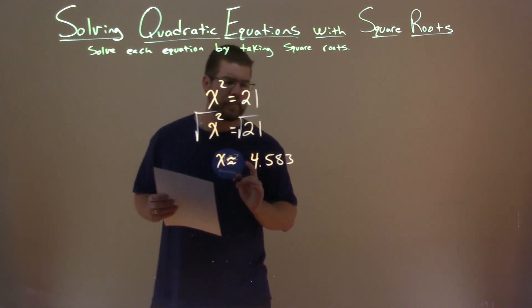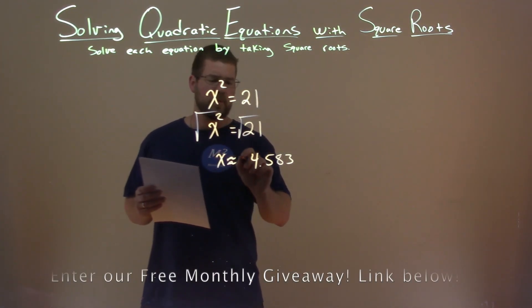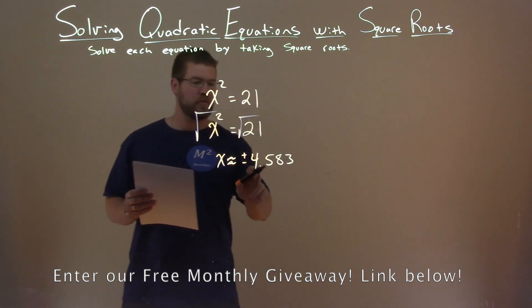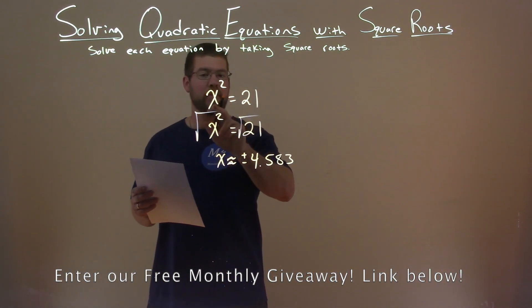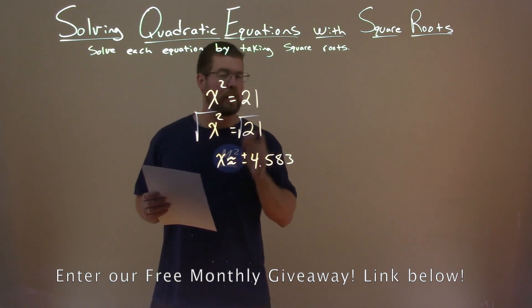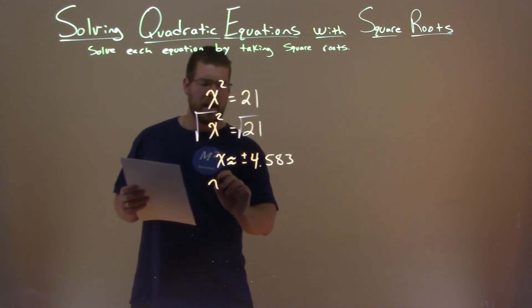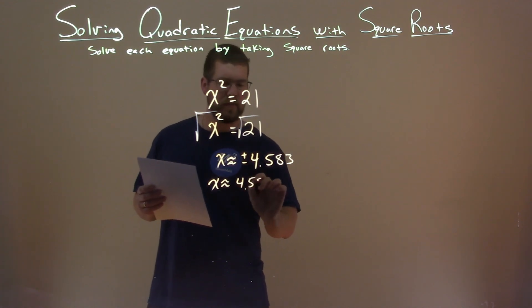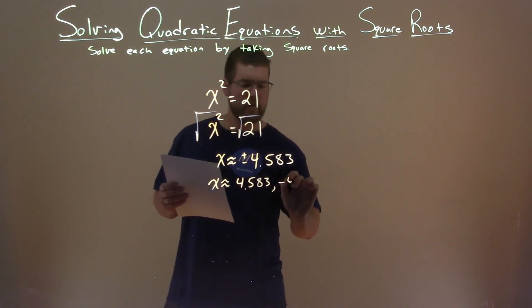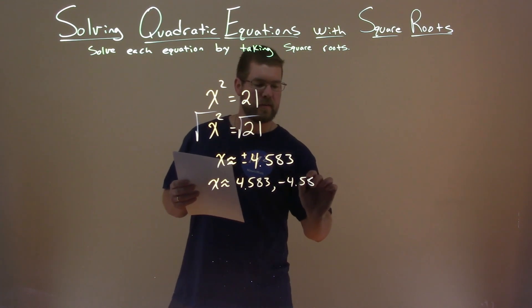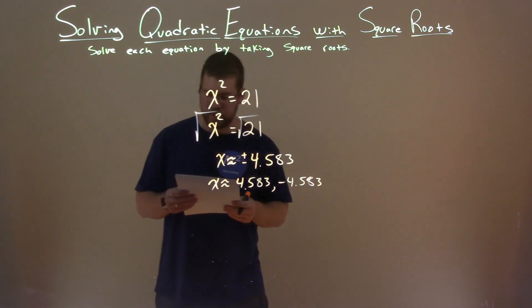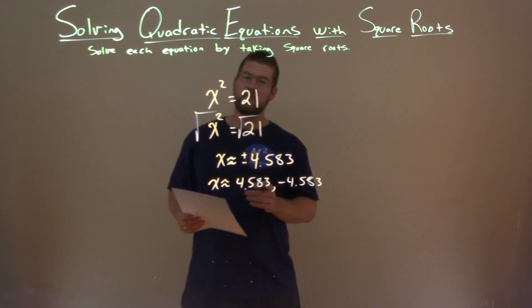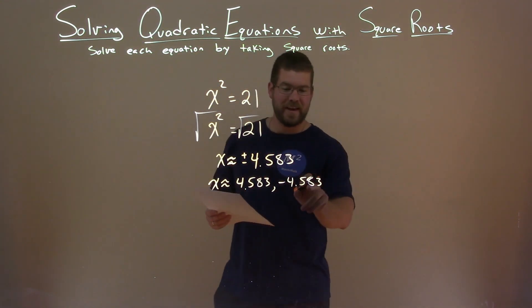But I'm not done. When we take the square root, we have to make this plus or minus. There are two options for x that, when plugged in, will give us 21 from our original equation. So x is approximately 4.583 and negative 4.583. That's our final answer.